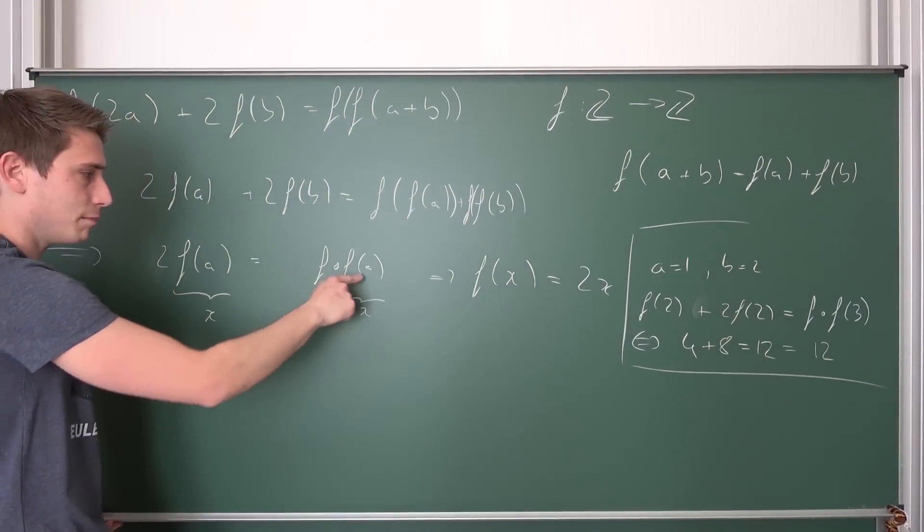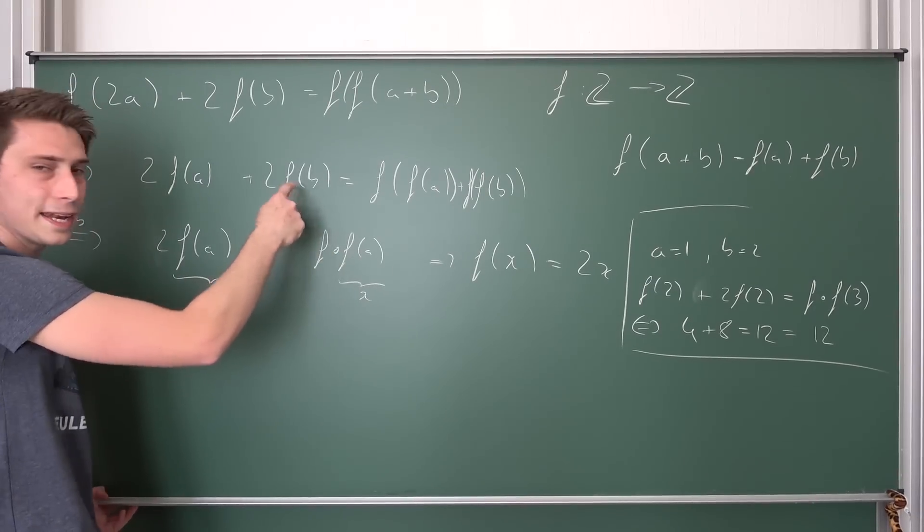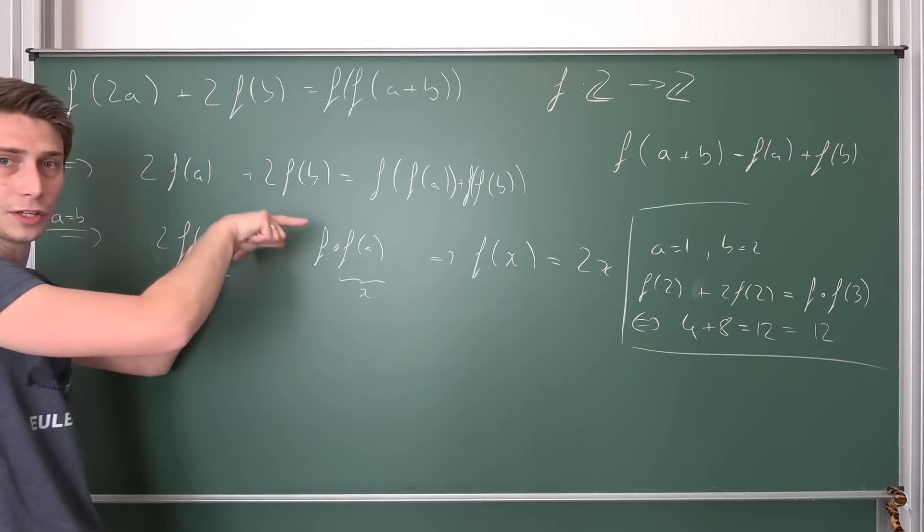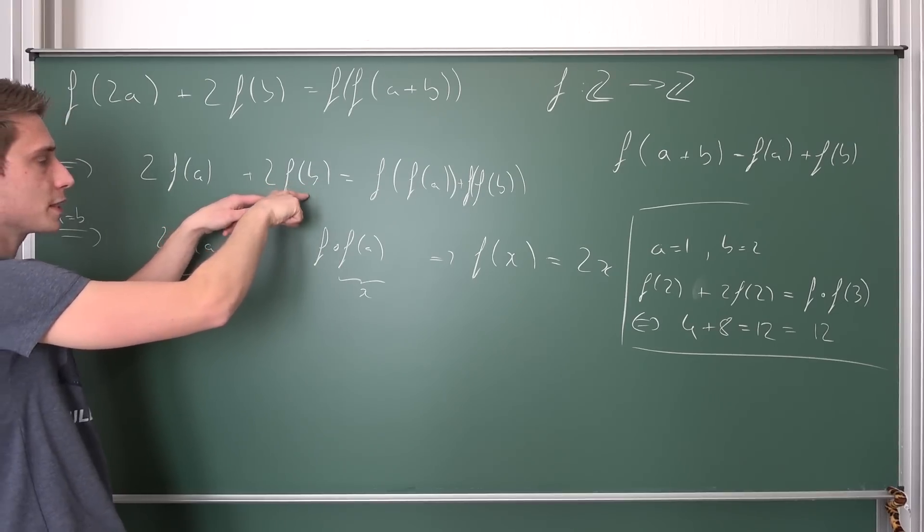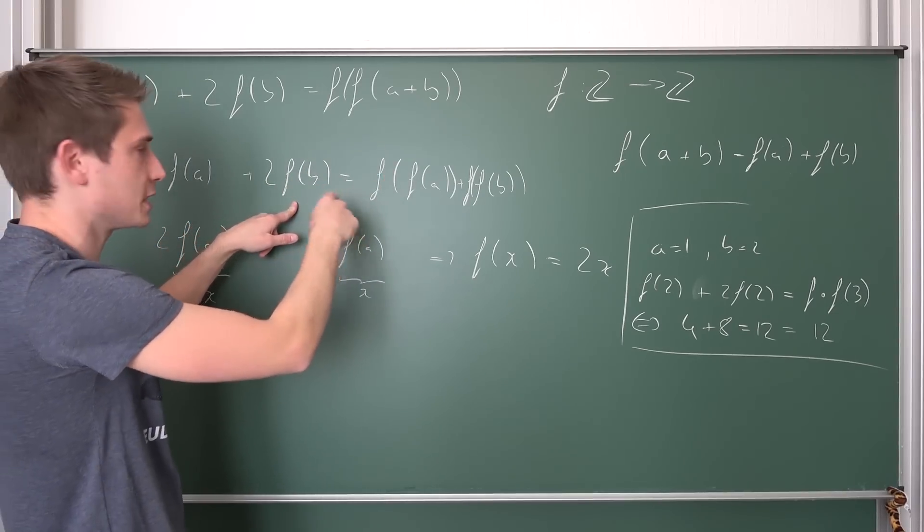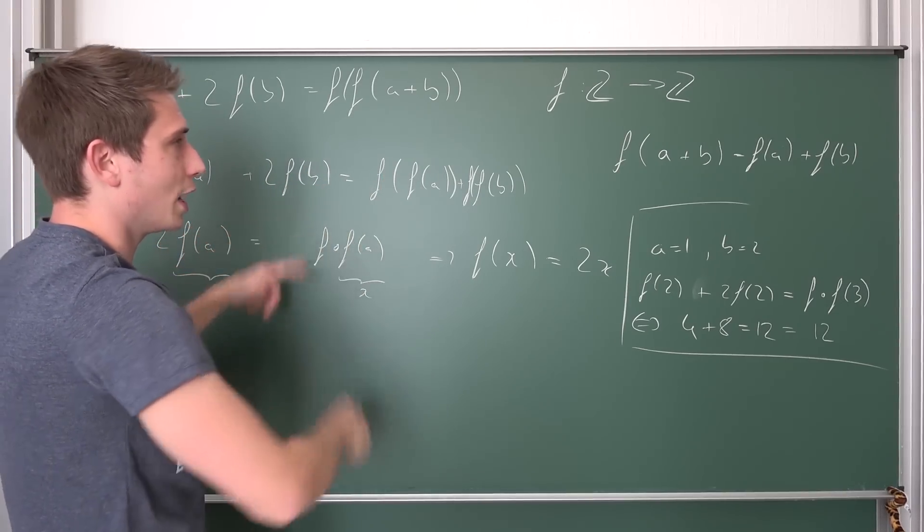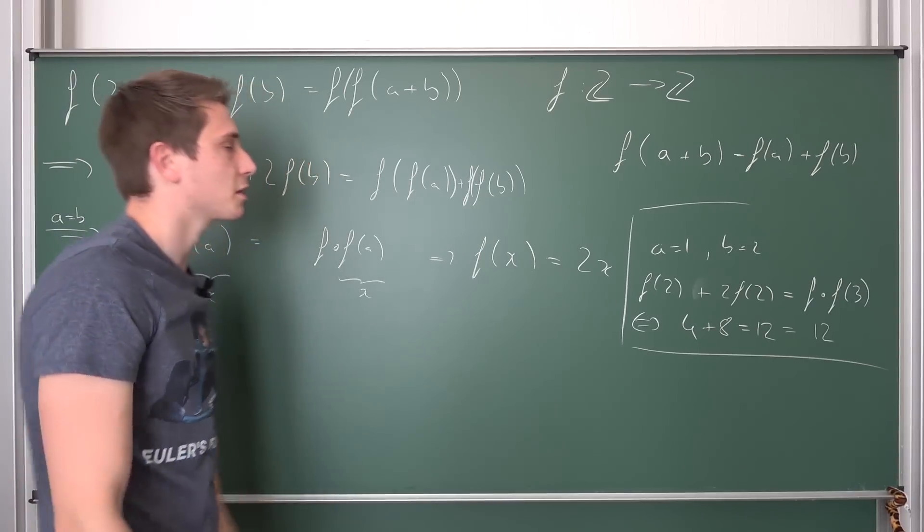Not continuous solutions to this problem. So when plugging in numbers into here, letting a be equal to b, we always assume that this function is continuous because we are going to take the limit as b approaches a for example.